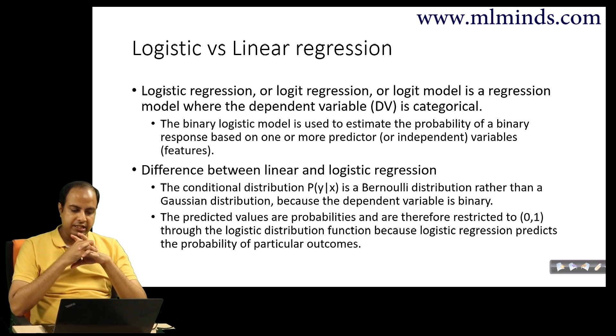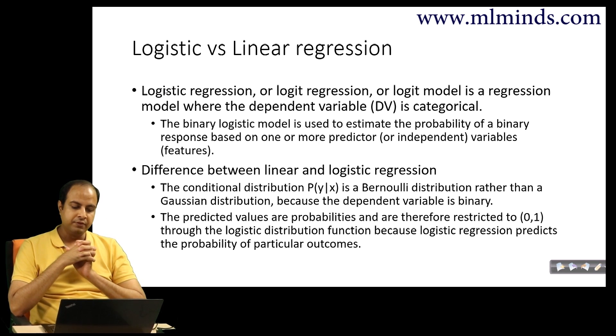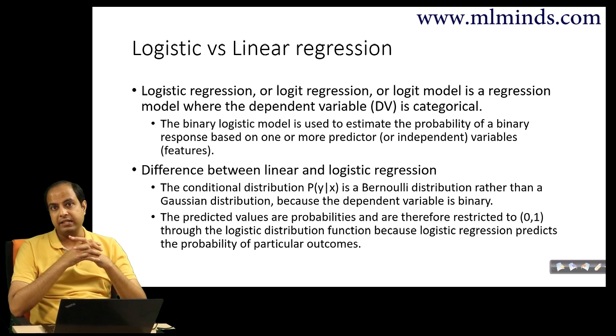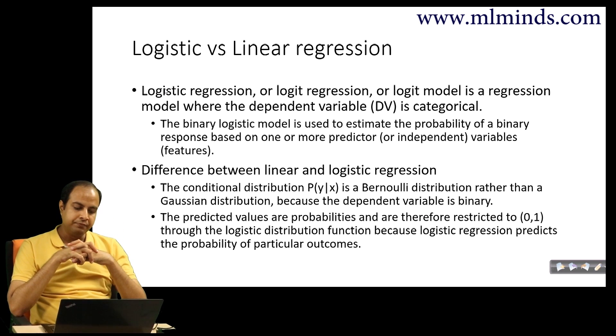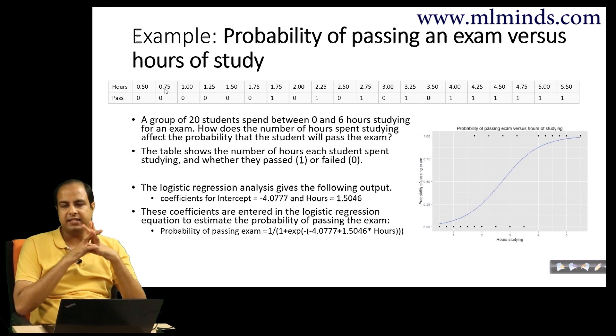The difference between linear and logistic regression is that the conditional distribution probability of y given x is Bernoulli in the case of logistic regression, while in linear regression it's a Gaussian distribution. This is because the dependent variable is binary. The predicted values are probabilities restricted to 0 and 1, while predicted values in linear regression can be in any range.